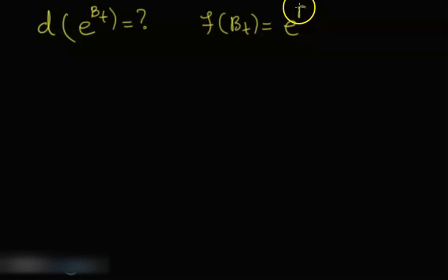Let's work out what is going to be the differential of the exponential of Brownian motion. So what is the differential of exponential of Brownian? We need to define a function, so let's say our function is e to the B_t. We need to apply the simplest version of Ito's lemma, so it says that the differential